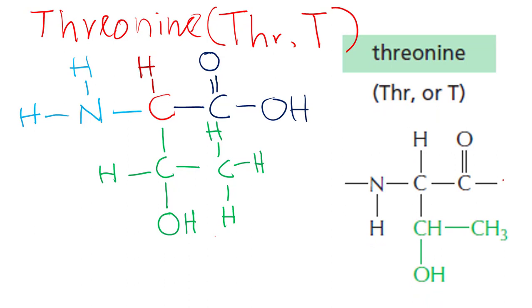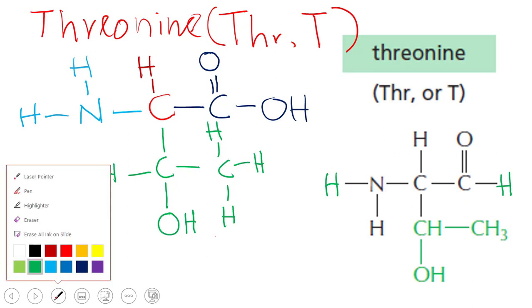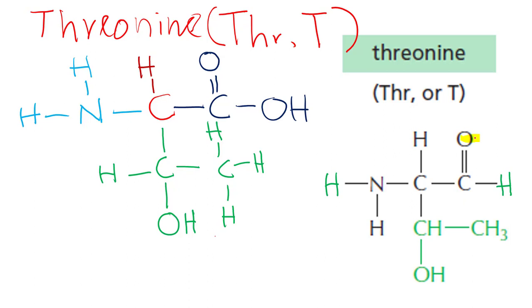So let's complete it and highlight the various regions. Now we select the highlighter. This is our carboxylic group, this is our amino group. These three groups, as you know by now very well, are common to all amino acids. And then it's side chain: we have CH, CH3, and this is CH3.